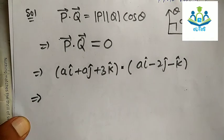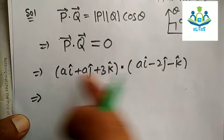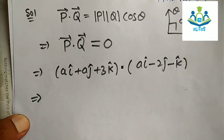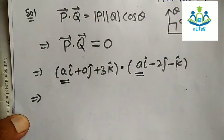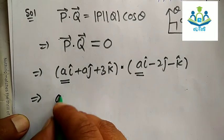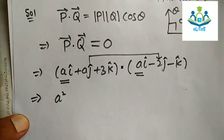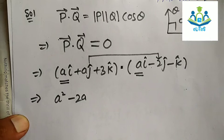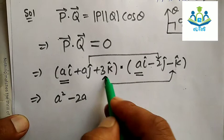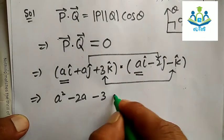We compute the dot product: i·i = 1, i·j = 0, i·k = 0. So p · q = a·a (i·i) + a·(−2)(j·j) + 3·(−1)(k·k) = a² − 2a − 3 = 0.